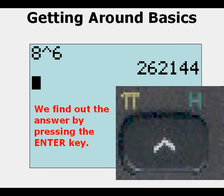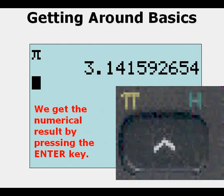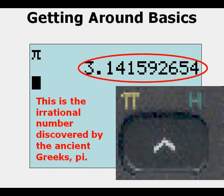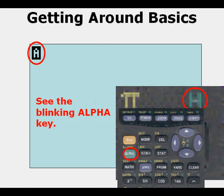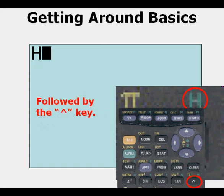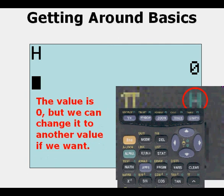We can enter the pi key by pressing 2nd and then the key itself which gives you 3.14159, the irrational number discovered by the Greeks many years ago. Now you can use the text by entering the ALPHA key and then the key itself which gives you the h. If you enter that again you can see that the value zero is stored for h, and we can change that value to another one, but that's another lesson.